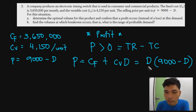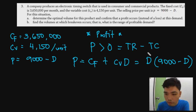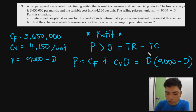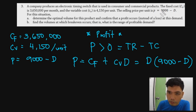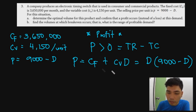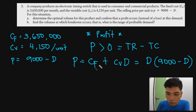Simplifying and setting dP/dD equal to zero: 4,150 equals negative D plus 9,000 minus D, giving 2D equals 4,850, so D equals 2,425 units. This is the optimal volume - the demand level that gives the maximum profit.